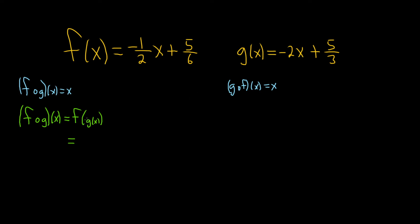So now we replace the inside piece here. So g of x is negative 2x plus 5 thirds. So this is f of negative 2x plus 5 thirds, just replacing the inside piece here with what it is.